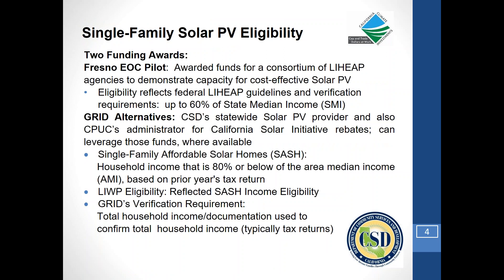From the cap-and-trade funds, we've received $192 million to date over four years, allowing us to allocate significant funds to solar PV. We made two funding awards: one to a pilot run by LIHEAP agencies, held to the standard of 60% of state median income, and one to a statewide administrator — Grid Alternatives — which also administers the California Public Utilities Commission's SASH solar rebate program. SASH has an 80% AMI requirement, and income verification there is typically through tax returns.